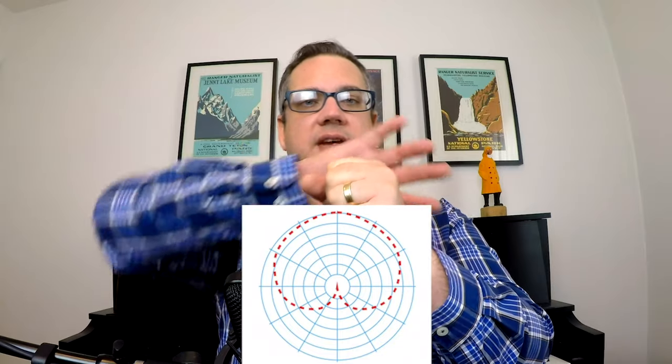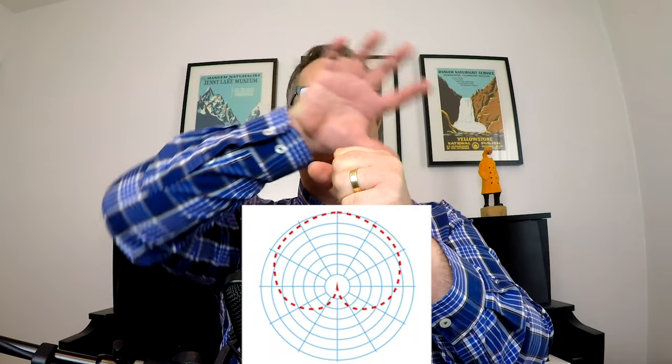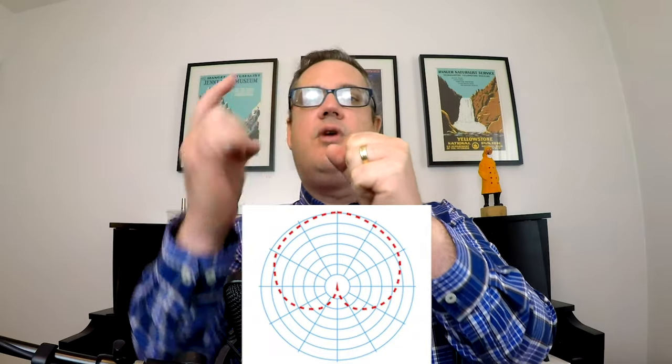So what does that mean for you? That SM58 is going to have a cardioid pattern, which means it captures sound from the front of the microphone. It goes into a heart shape at the back and the reason it does that is it does not want to pick up sound from the back side — so that sound is canceled. That's a cardioid pattern.